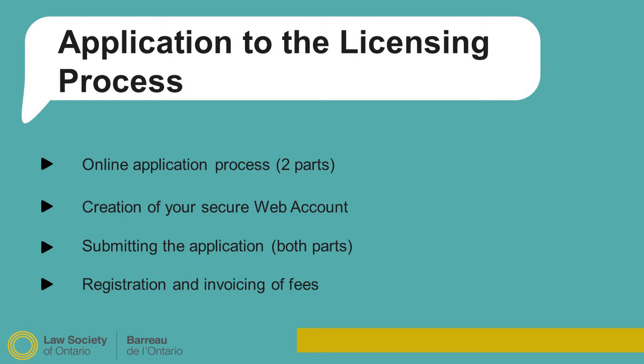You can also preview the good character questions before you apply online by reviewing the good character amendment form under the fees and forms section of the website. The form includes all the good character questions and answers that you should disclose to the Law Society at the point of application and thereafter if anything changes while you progress through the licensing process.